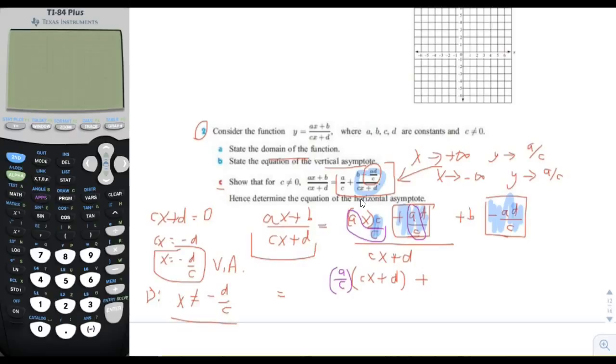And now here we have the leftover, which is plus b minus ad divided by c, and it's all divided by cx plus d. So now we can see that if we separate it out, we're going to have a over c times cx plus d for the first fraction, and then we're going to have b minus ad over c over cx plus d for the second fraction.